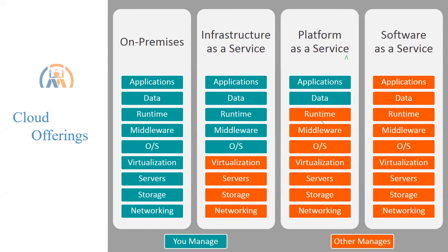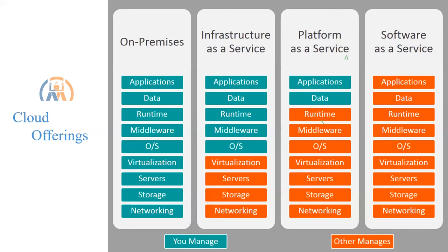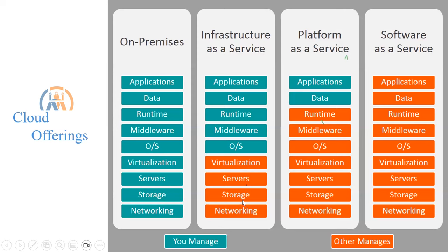The organization had to hire different teams to perform each and every task on that list. By choosing cloud computing services, we can choose different service models. One is Infrastructure as a Service, or IaaS, where we manage the infrastructure part while the other services — virtualization, servers, storages, and networking — are taken care of by the cloud providers.